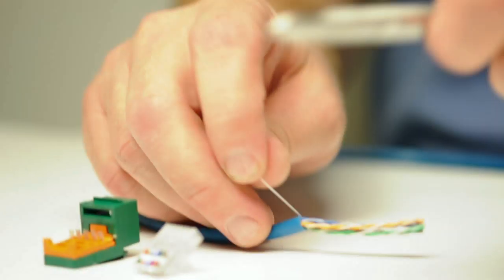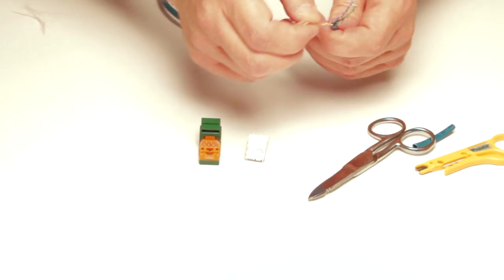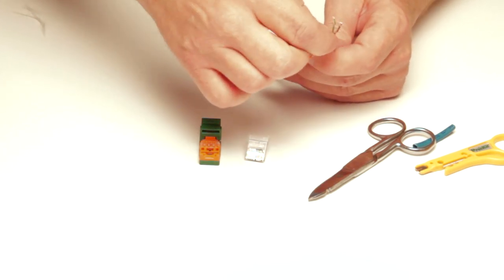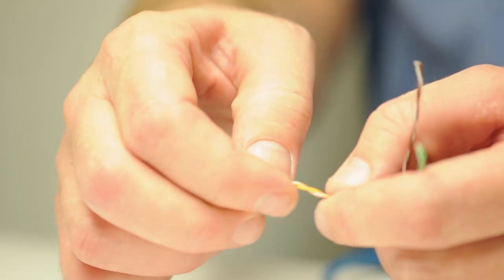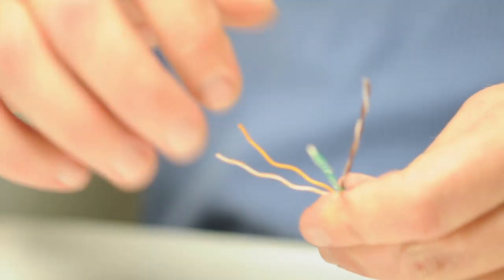I then cut the internal string with my scissors and began to fan out the pairs. Untwisting the pairs allows me to easily install my cable into the jack.